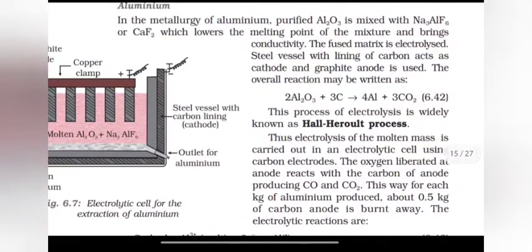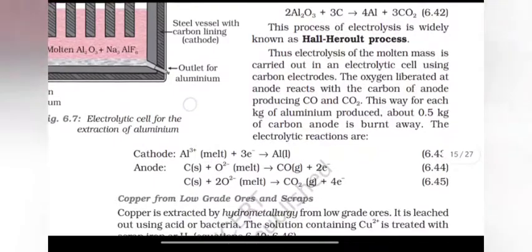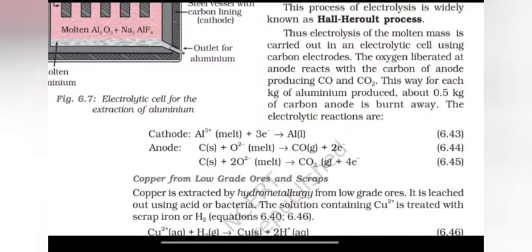Aluminum: In the metallurgy of aluminum, purified Al2O3 is mixed with Na3AlF6 or CaF2 which lowers the melting point of the mixture and brings conductivity. The fused matrix is electrolyzed. Steel vessel with lining of carbon acts as cathode and graphite anode is used. The overall reaction may be written as 2Al2O3 plus 3C gives 4Al plus 3CO2. This process of electrolysis is widely known as Hall-Heroult process. Thus electrolysis of molten mass is carried out in an electrolytic cell using carbon electrodes. The oxygen liberated at the anode reacts with carbon of anode producing CO and CO2.